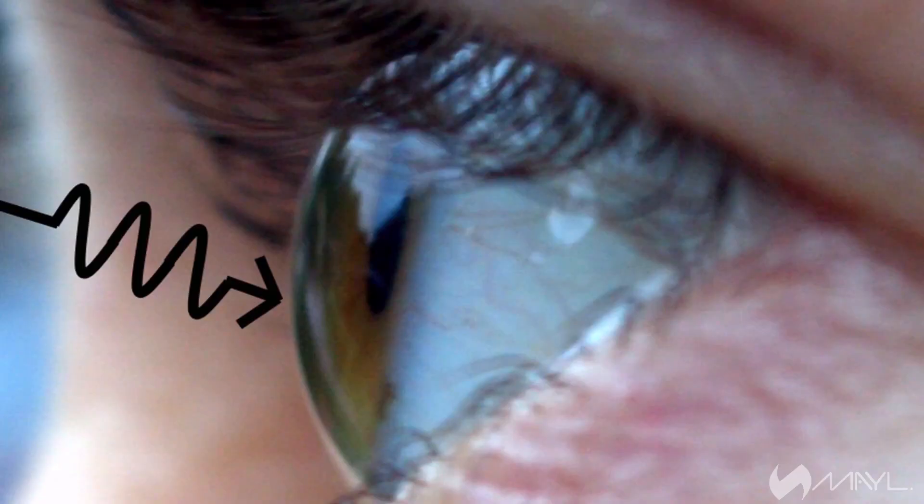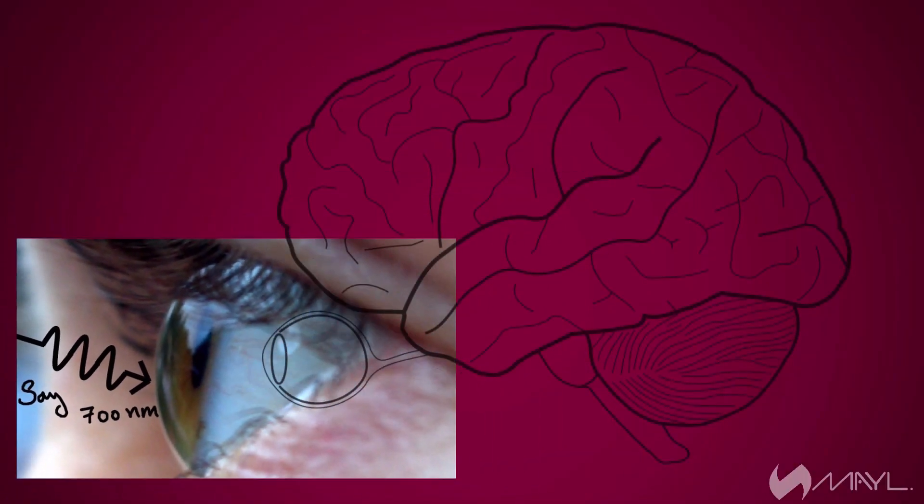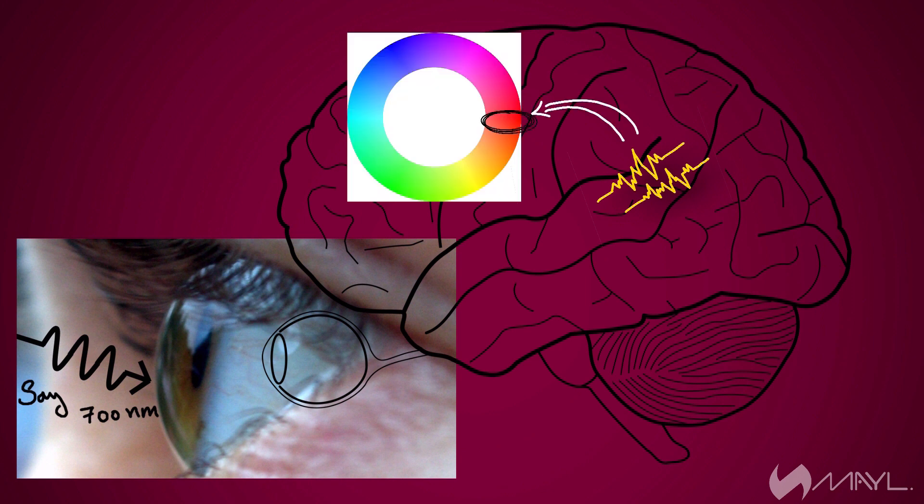The light of each wavelength ideally creates a unique sensation in the cones of our eyes, which then send an appropriate signal through the optical nerves, which is then processed by our brain that tells us that we see this particular color.